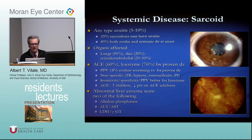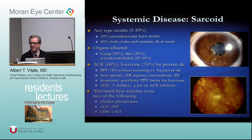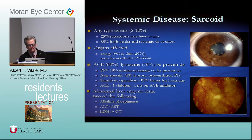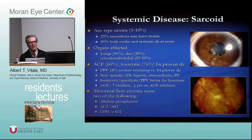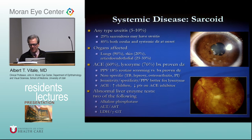Sarcoidosis can produce any type of uveitis. About 25% of sarcoidosis patients may have uveitis. Organs affected include lungs, skin, reticuloendothelial system, and eye. ACE and lysozyme are useful in patients with active disease but are not diagnostic — they're nonspecific and can be elevated in TB, leprosy, and osteoarthritis. ACE is also physiologically elevated in children and decreased in patients on ACE inhibitors. The best screening test is chest x-ray, since 90% of patients with active disease will have an abnormal chest x-ray.